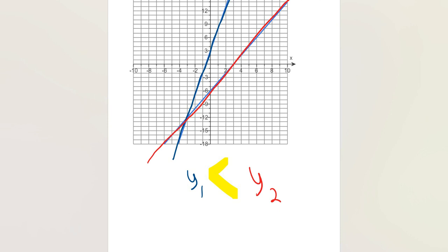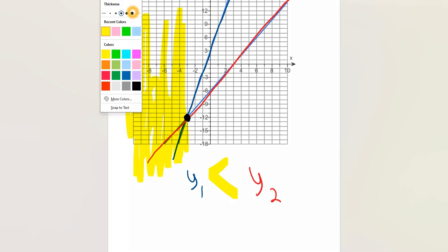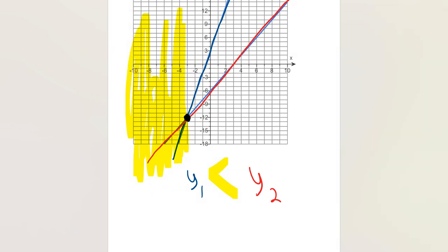So you're looking for where the blue line is below the red line. And that actually occurs over here. This is your intersection point right here. And to the left of that point, this is where the blue line lies below the red line.